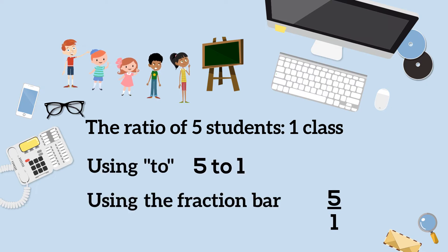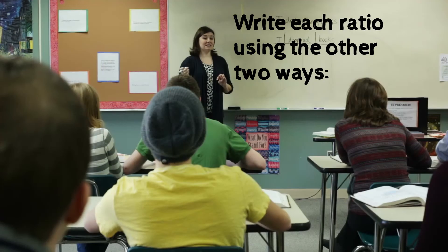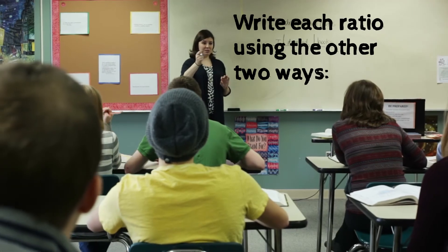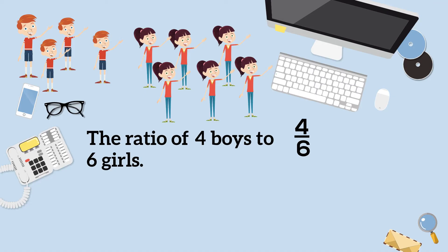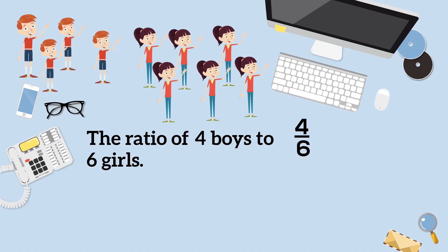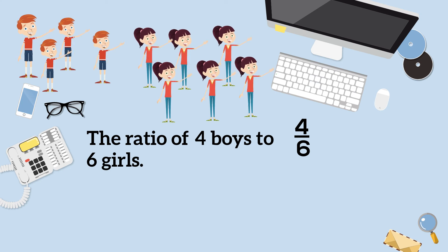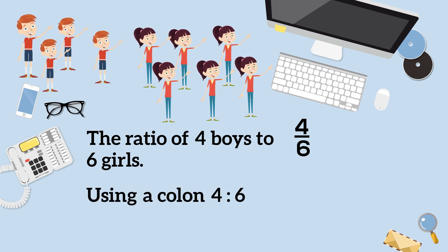And finally, write each ratio using the other two ways. You have the ratio of 4 boys to 6 girls written in fraction form. And here are the other two ways.